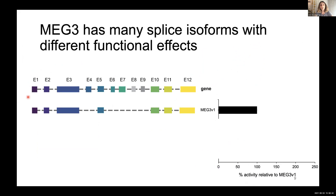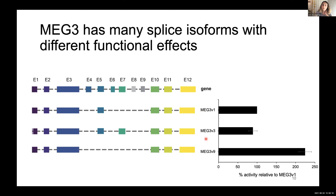MEG3 has many different splicing isoforms that all carry a splicing pattern keeping exons 1, 2, 3, 10, 11, and 12, while variation arises from alternative splicing of the middle exons 4 through 9. MEG3 variant 1 is the most abundant variant in all cell types where MEG3 is actively expressed, so I'll use it as my reference point. I'll also discuss two more isoforms — variants 3 and 9 — which were chosen because they show minimal differences in exon composition compared to variant 1: variant 3 has one extra exon, and variant 9 is lacking one exon.